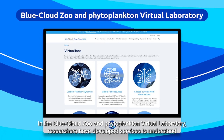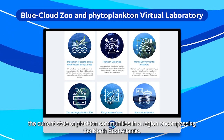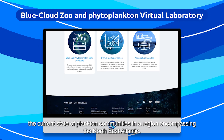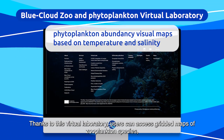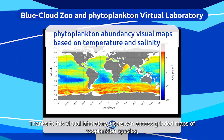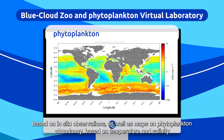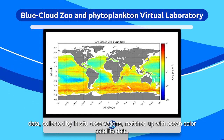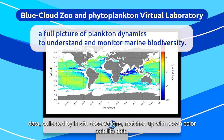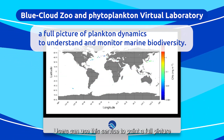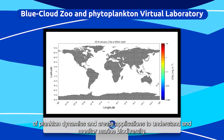In the Blue Cloud Zoo and Phytoplankton Virtual Laboratory, researchers have developed services to understand the current state of plankton communities in a region encompassing the northeast Atlantic. Users can access gridded maps of zooplankton species based on in situ observations, as well as maps on phytoplankton abundance based on temperature and salinity data matched with ocean color satellite data, to paint a full picture of plankton dynamics and monitor marine biodiversity.